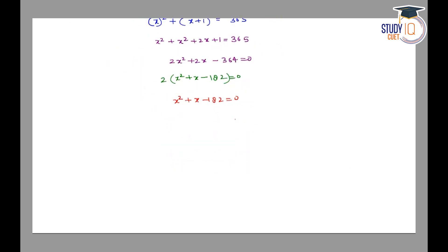Now, minus 182 is multiplied by 1. We get minus 182 and factors of minus 182 such that their sum will be 1. So, this will be minus 13 and 14.